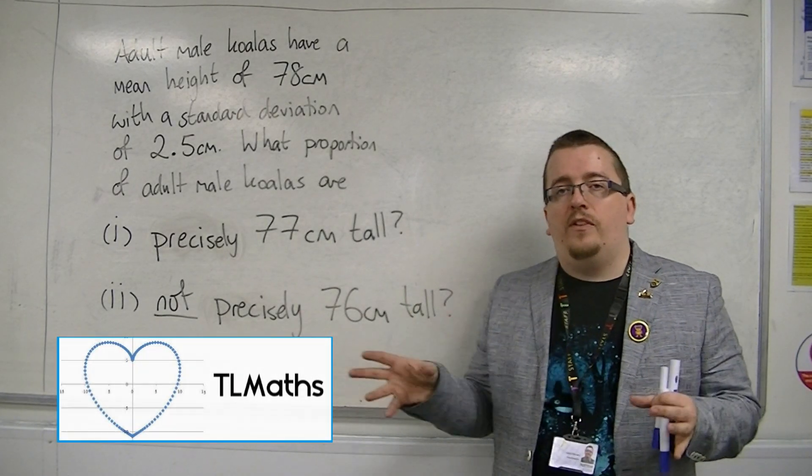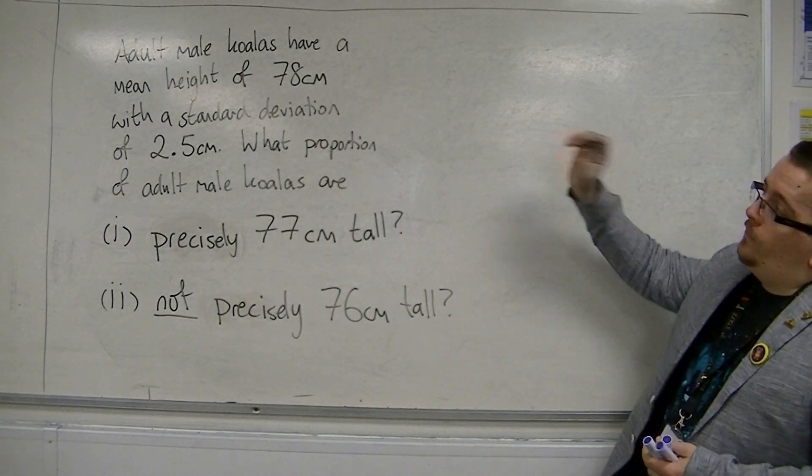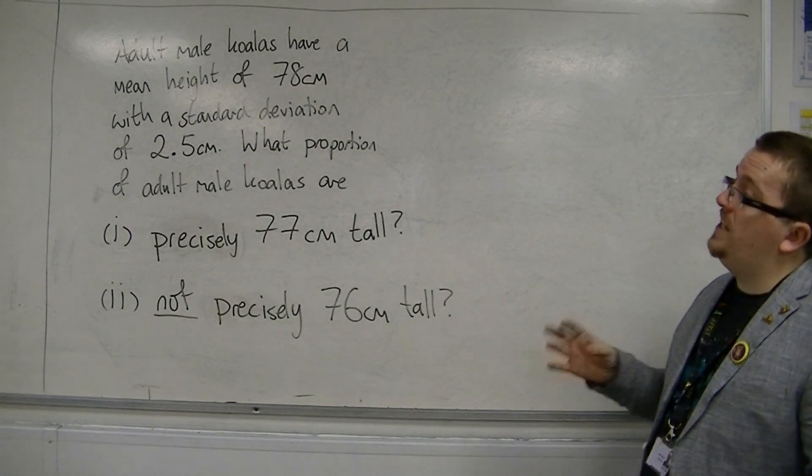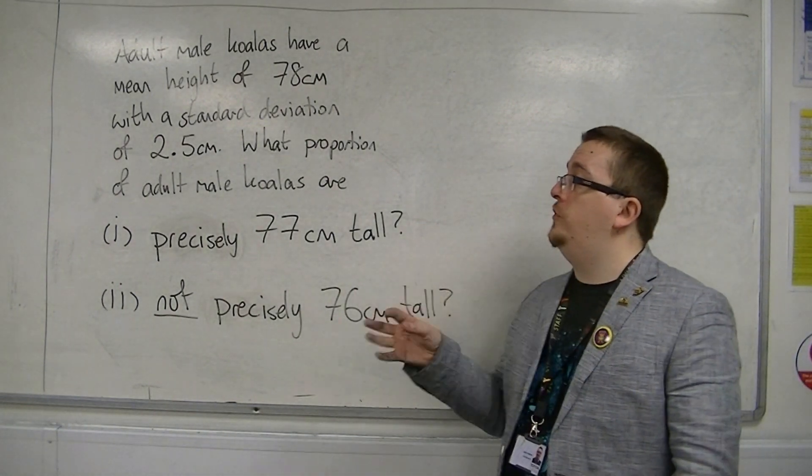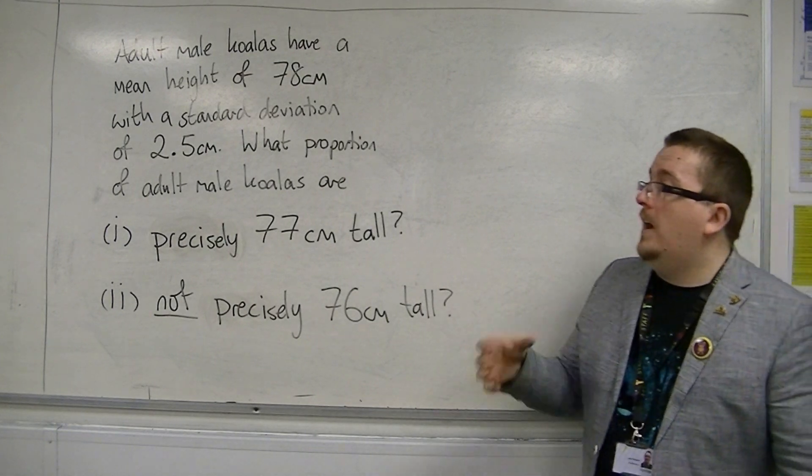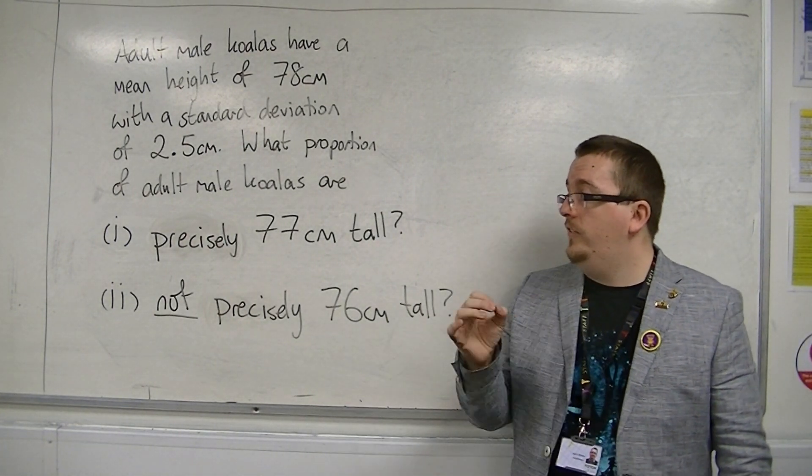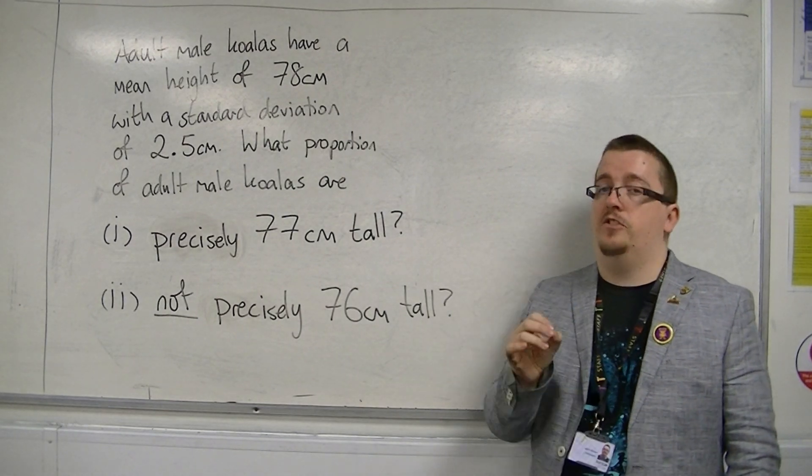I've continued on from the previous example where we've got these adult male koalas. They have a mean height of 78 centimeters with a standard deviation of 2.5 centimeters. Now what we're asking is what proportion of adult male koalas are precisely 77 centimeters tall.